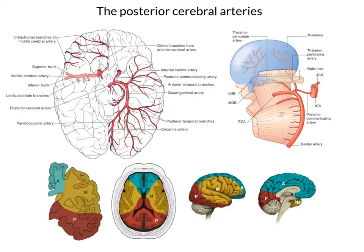We're now going to look at the posterior cerebral arteries. You'll recall that the posterior cerebral arteries arise as a bifurcation from the basilar artery. This is the point here at which the basilar artery splits into a left and a right posterior cerebral artery.